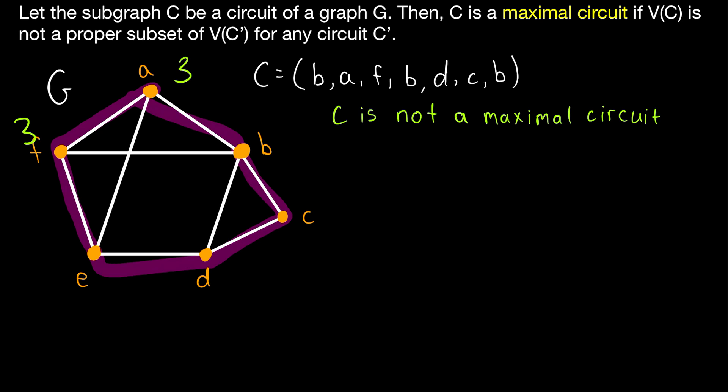And that's it for now. A circuit C is a maximal circuit if its vertex set is not a proper subset of the vertex set of any other circuit — so a circuit is maximal if there's no circuit containing all of its vertices and more.